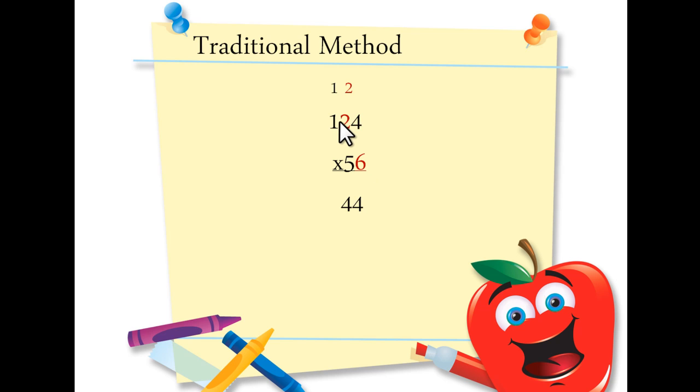6 times 2 is 12, plus 2 more is 14. Write your 4, regroup your 1. 6 times 1 is 6, plus 1 is 7. Now that we've multiplied the ones, we move on to multiply the tens.